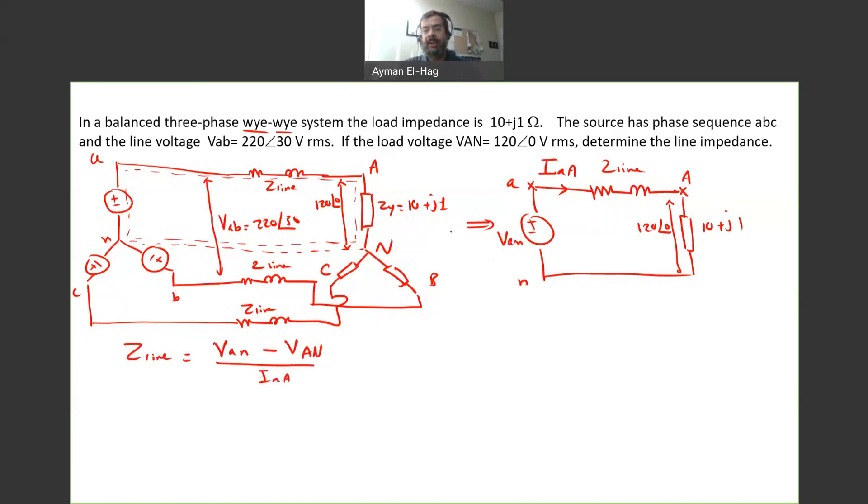So basically I need to find the VAN, small VAN capital N, and the current. We already know VAN, so I need to find capital. We need to find VAN small, but we know VAB. And we know that the VAB is equal to root 3 VAN, and you add 30-degree phase shift to the angle.